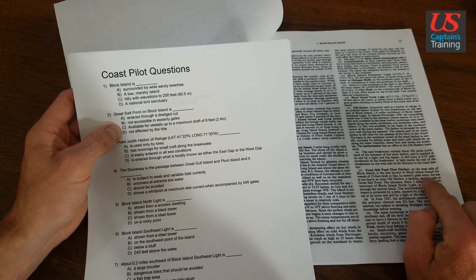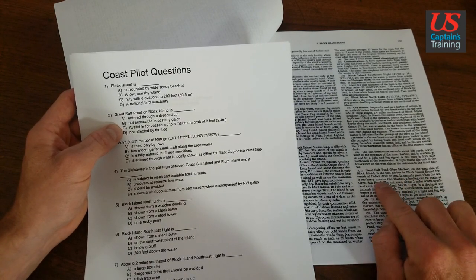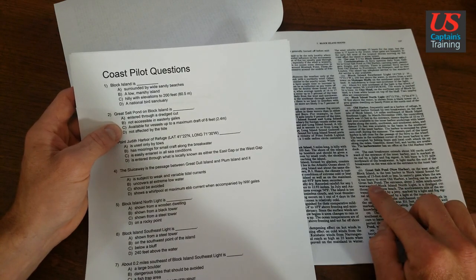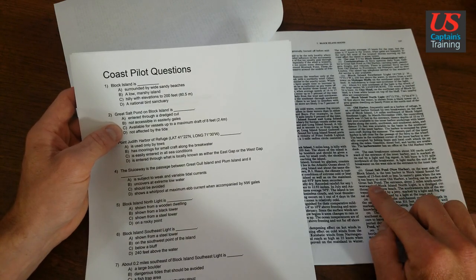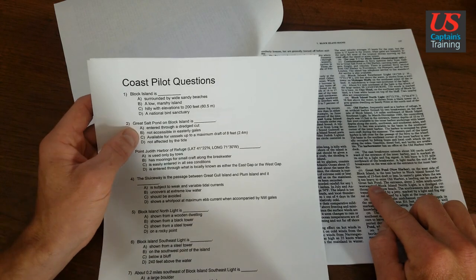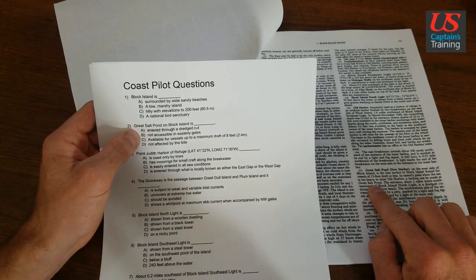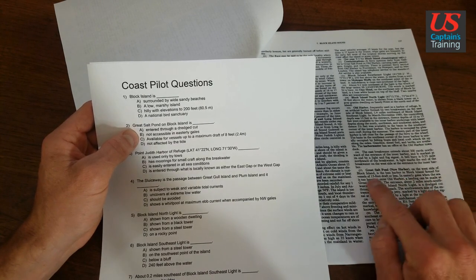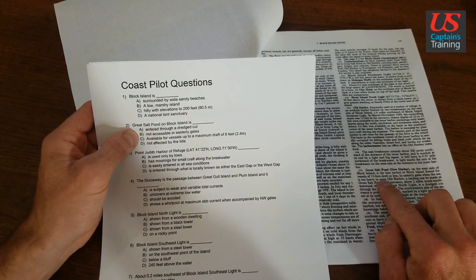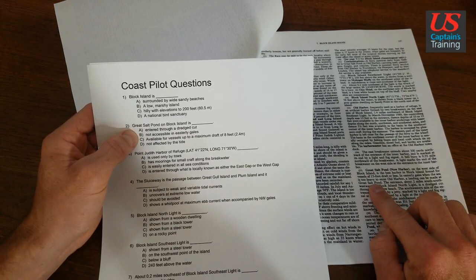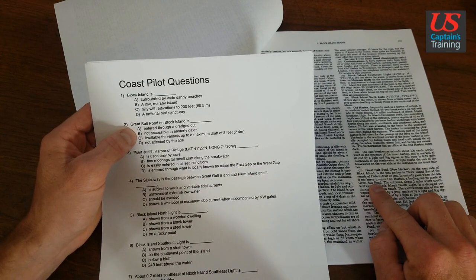In easterly gales, when the sea is too heavy to enter Old Harbor, a landing can be made at Great Salt Pond. So not accessible in easterly gales is one of the answers, but we're seeing that in easterly gales a landing can be made at Great Salt Pond, so that's not the correct one.